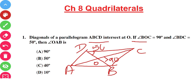You have to calculate angle OAB. First, this angle BDC is 50 degrees, so by the alternate interior angles property, the corresponding angle will also be 50 degrees. And this angle will be 90 degrees by linear pair.